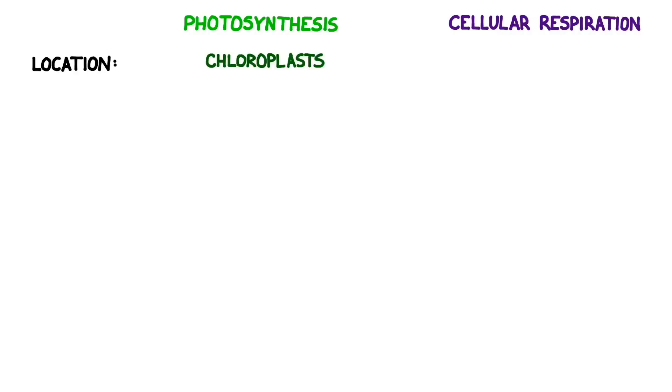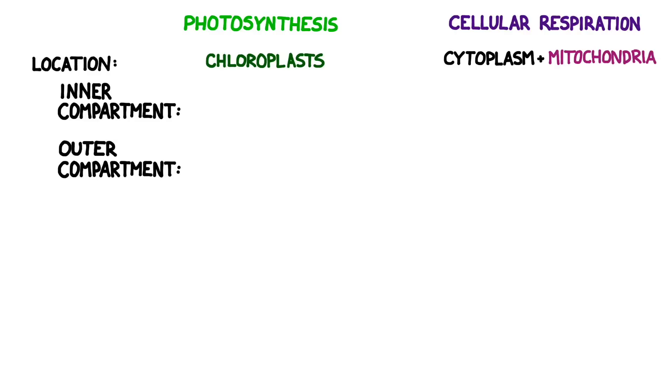As we previously mentioned, photosynthesis takes place in the chloroplasts and respiration takes place in both the cytoplasm and the mitochondria. There's more to it than that though. Both the chloroplasts and the mitochondria have inner and outer compartments that are crucial to the reactions functioning correctly. In the chloroplasts the inner compartment is called the thylakoid and the outer compartment is called the stroma. In the mitochondria the inner compartment is called the matrix and the outer compartment is called the inter-membrane space.